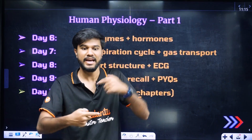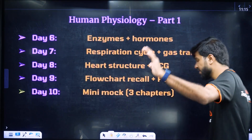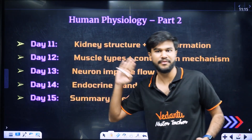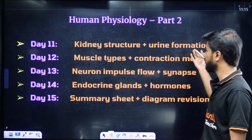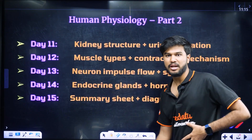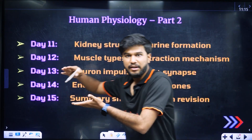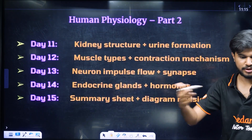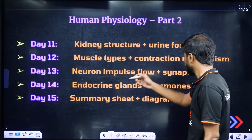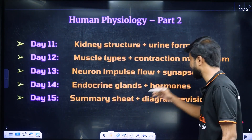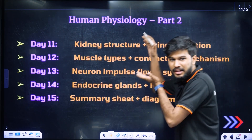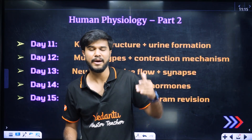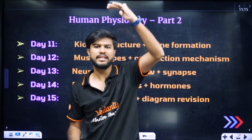In phase 3, you apply human physiology to the remaining parts. The kidney structure and neuron formation are covered here. Phase 3 includes muscle types, locomotion, neural coordination, neural impulse and synapses, endocrine glands, and hormones — that's human physiology part 2.